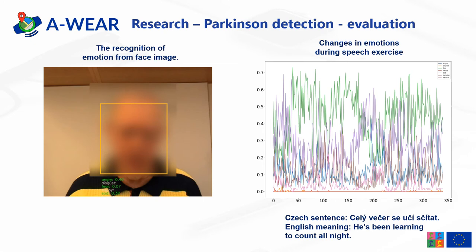On this slide I will present the results of the use of facial emotion recognition software. On the left side, you can see the detected face together with the intensity of six emotions represented as numbers. Due to privacy issues, the face of the PD patient was blurred. In the second picture, you can observe the record of changes in expressing emotion during pronunciation of the tongue twister, which means in English: 'he has been learning to count all night.' The time series represent different emotions in the chart.